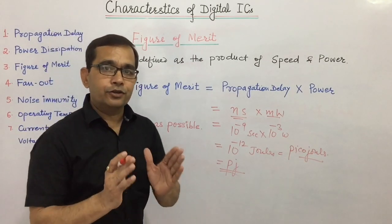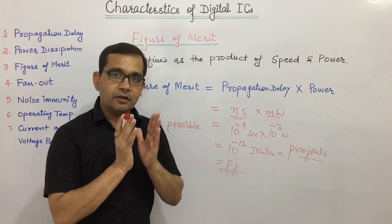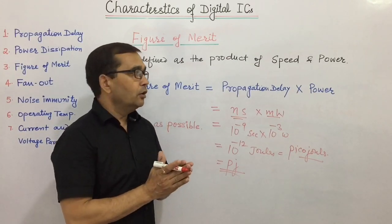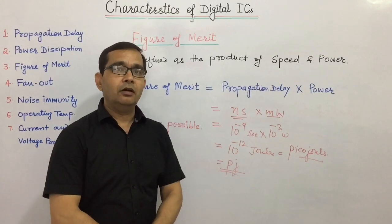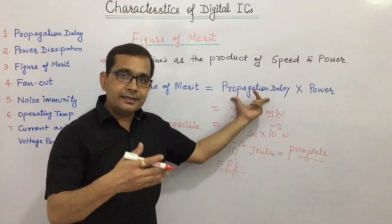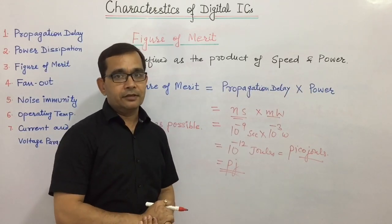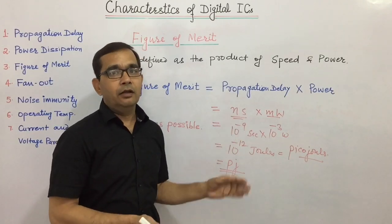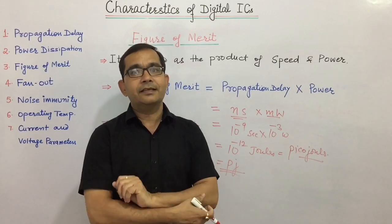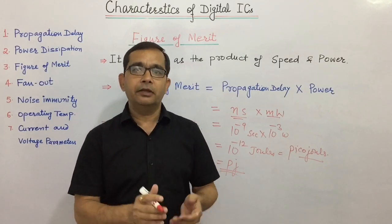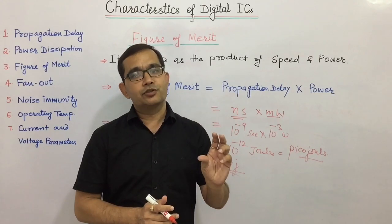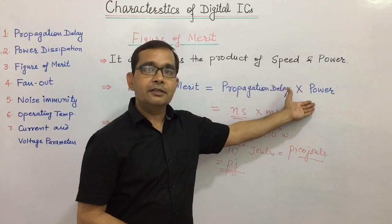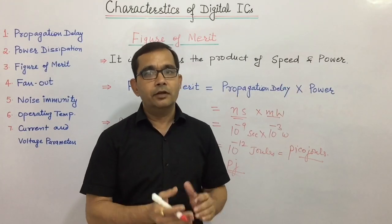It is always desirable that the figure of merit be as low as possible, meaning both propagation delay and power dissipation should be low. However, there is always a compromise between propagation delay and power because the figure of merit is constant. If you want to increase the speed of the digital circuit, power dissipation increases; if you want to lower power dissipation, the speed of operation decreases. For example, in modern Android phones, running many applications increases power dissipation, draining the battery faster. So there is always a compromise between speed and power in a digital circuit.